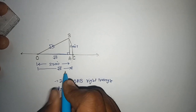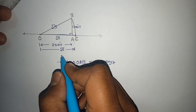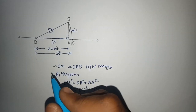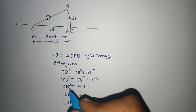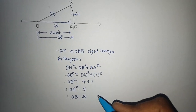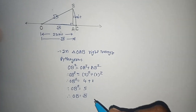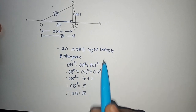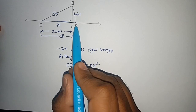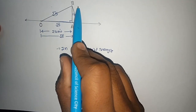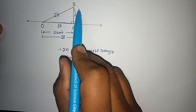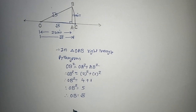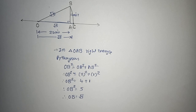So this is how you can directly represent under root 5. Otherwise, you can also do it step by step: first take root 2, draw the perpendicular and get root 3, again get root 4 which equals 2, draw another perpendicular and get root 5. And if you have to represent under root 6, again take the perpendicular from point C equal to 1 unit, join it, and you will get under root 6. This is how you can represent any irrational number on the number line.